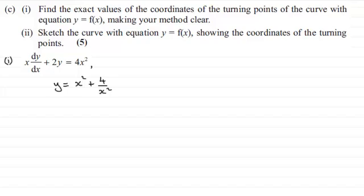So for stationary points, for turning points, we know that the gradient given by dy/dx would have to equal zero. So I'm going to go into this equation and just say therefore that when dy/dx equals zero, what are we going to get? Well, we're therefore going to have x times zero, x times zero, plus 2y equals 4x squared.